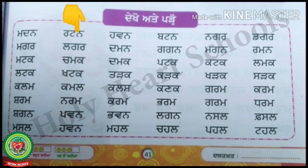Now look at the second line and start reading. The first word of the second line is raratenkananna — ratan. And the next word of the second line is lalaggarara — lagar.